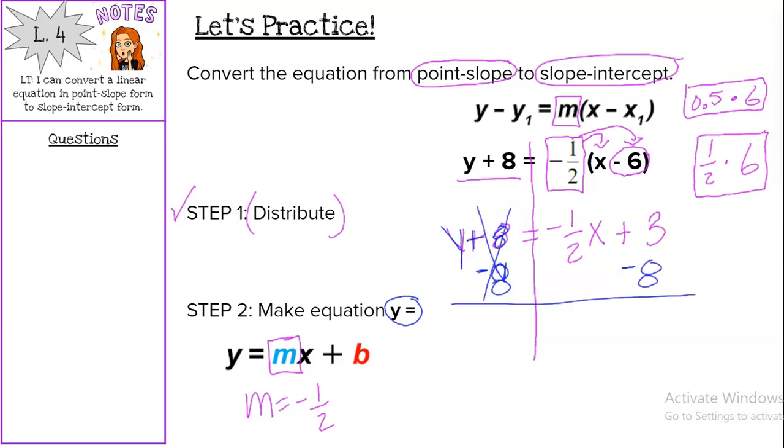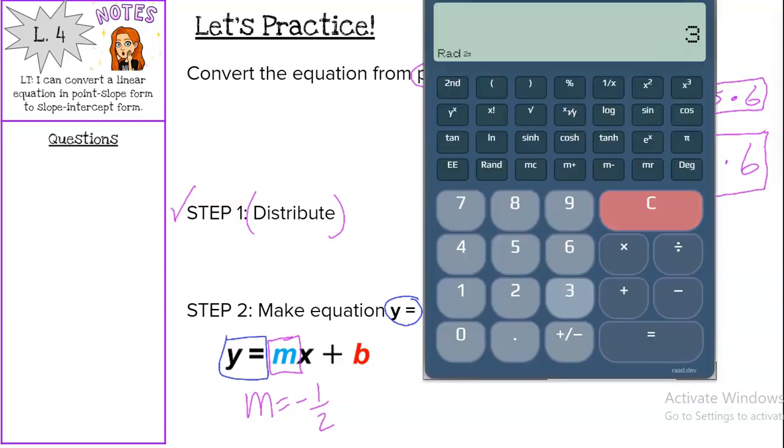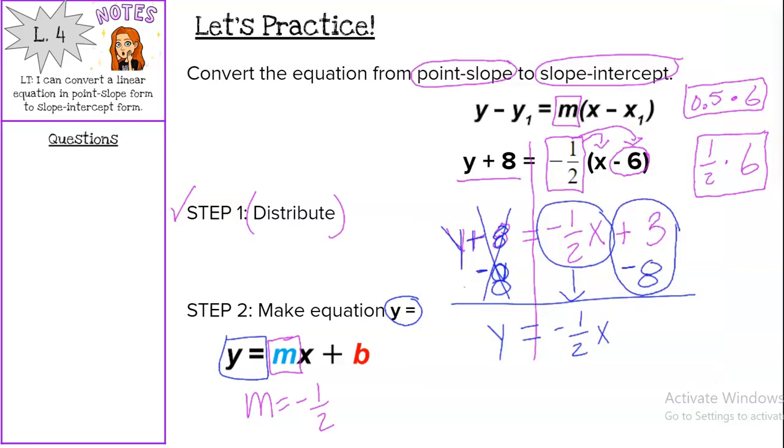8 minus 8 is 0, so we're left with y equals, which again is that goal. Bring down the negative 1 half x, and then complete the operation. 3 is positive, so just 3 minus 8. If you need, you can always check with the calculator. 3 minus 8 gives us that negative 5.